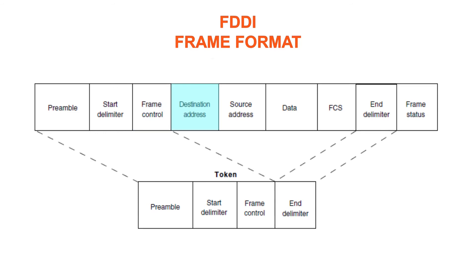The destination address contains a unicast, multicast, or broadcast address. As with Ethernet and token ring addresses, FDDI destination addresses are 6 bytes long. The source address identifies the single station that sent the frame; FDDI source addresses are also 6 bytes long. The data field contains either information destined for an upper-layer protocol or control information. The frame check sequence field is filled by the source station with a calculated cyclic redundancy check value dependent on frame contents. The destination station recalculates the value to determine whether the frame was damaged in transit; if so, the frame is discarded.